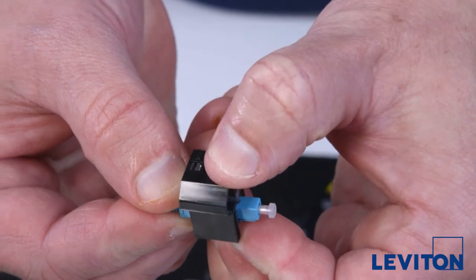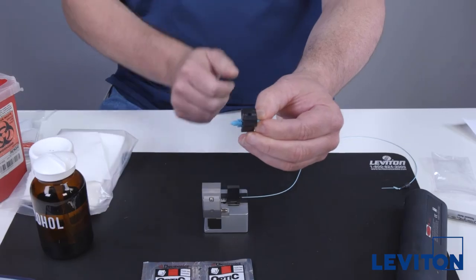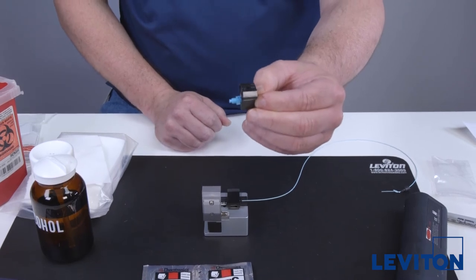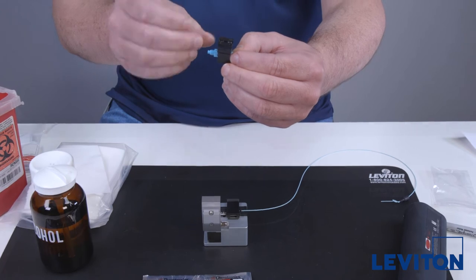Press down above window one until it clicks. Then do the same for window two. A click will be heard for each wedge. This ensures both cams are engaged into the connector.